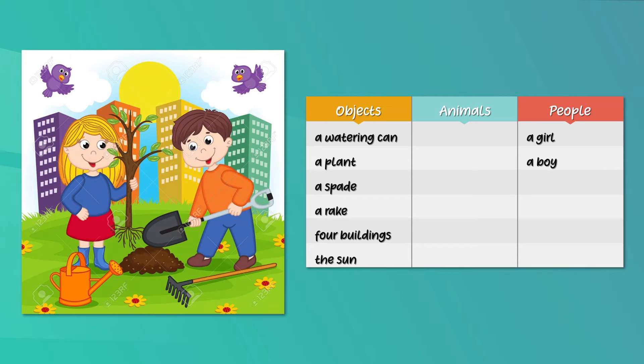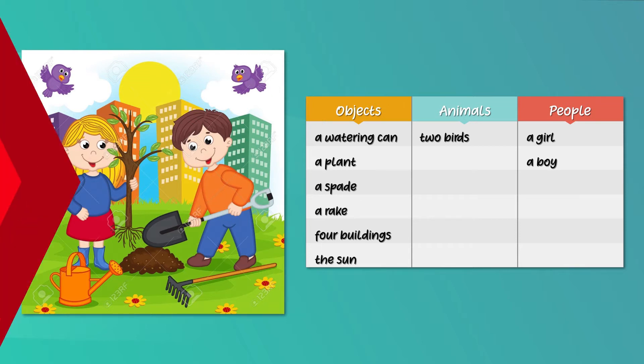Then animals — there are birds. Actually there are two birds. Okay children, now you have listed down all the objects, animals and people in the picture.